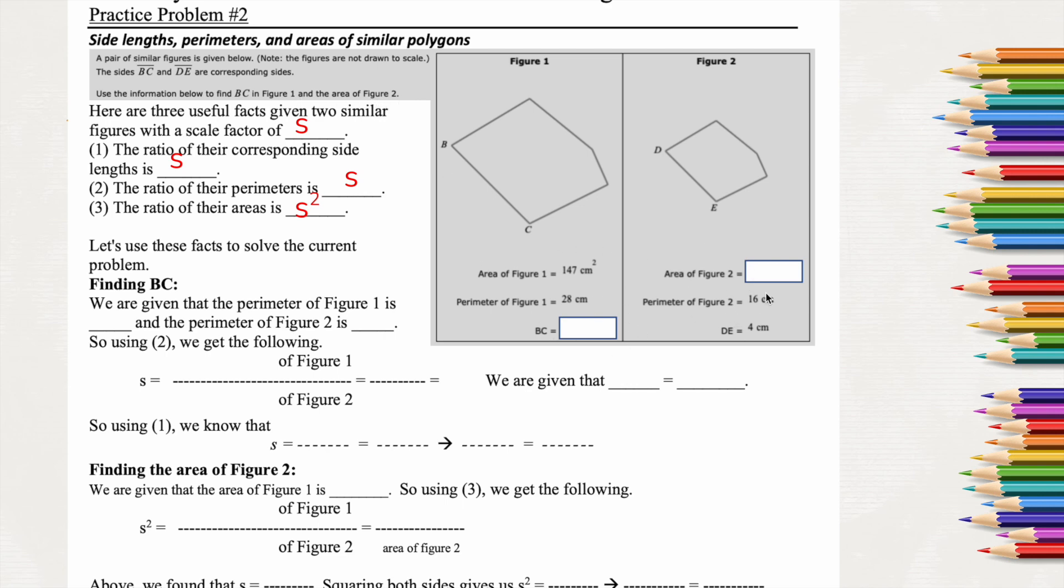So we're going to go through and we're going to find these pieces here. So we are given that the perimeter of figure 1 is 28 centimeters, and the perimeter of figure 2 is 16. So we actually have the perimeter across both of these, and that's actually what we need to look for.